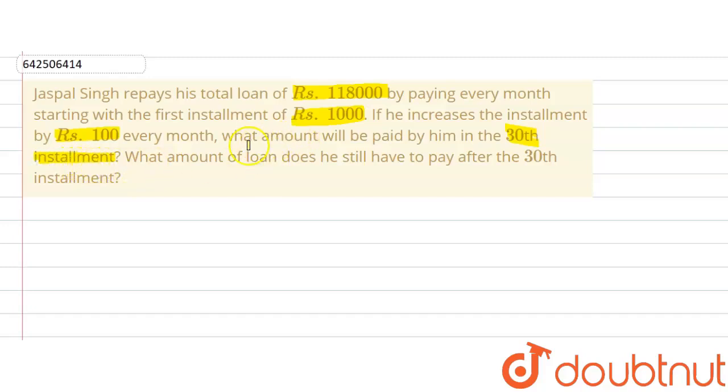The question further asks: what amount of loan does he still have to pay after the 30th installment? This is the second part of the question.